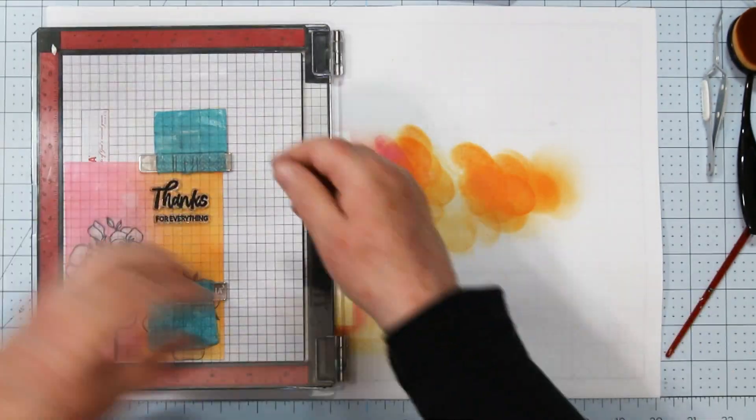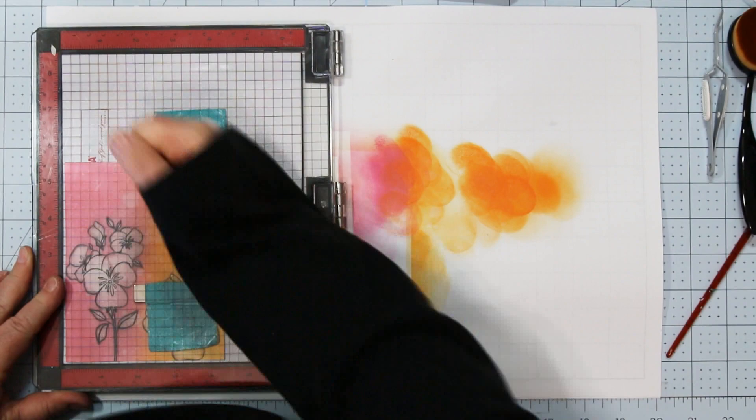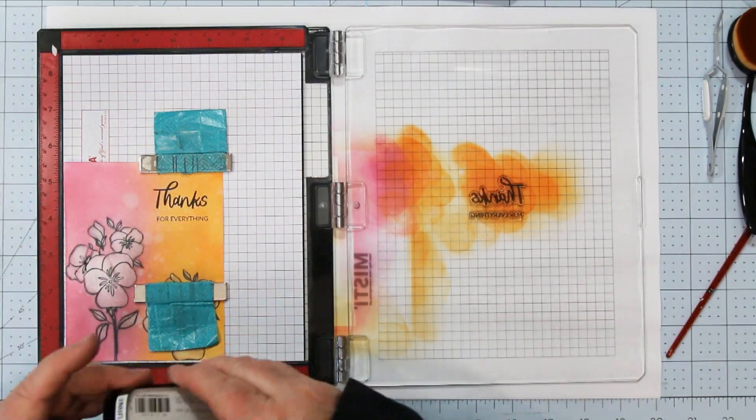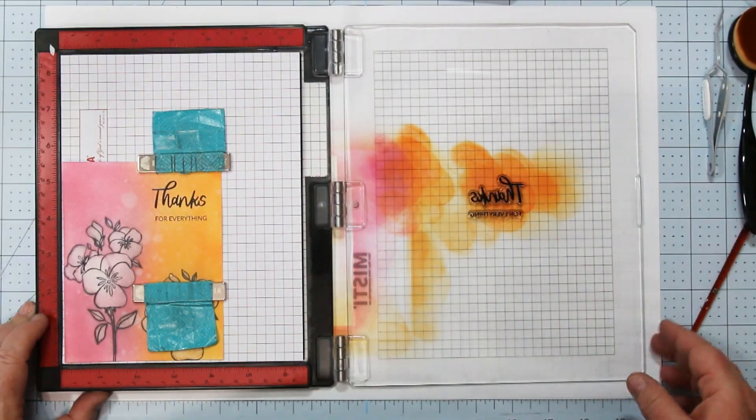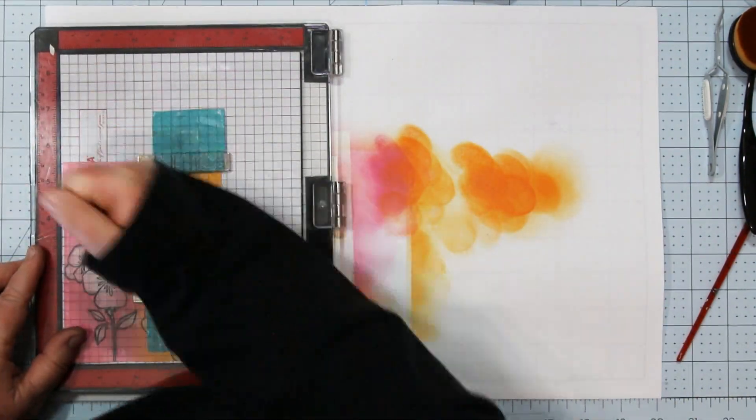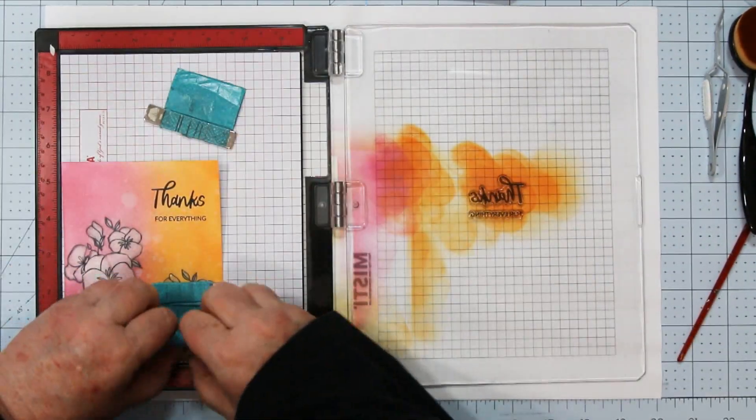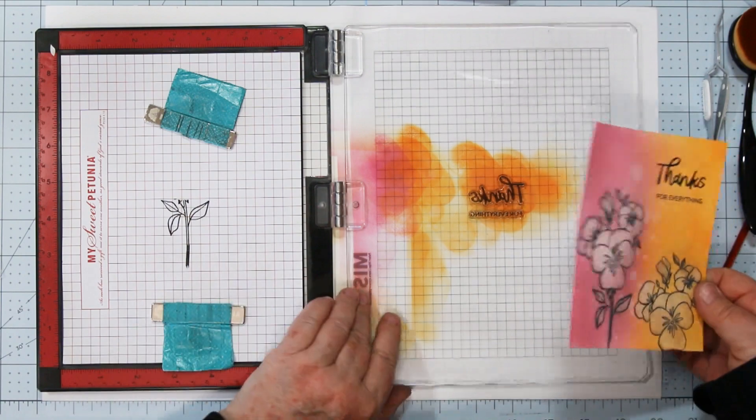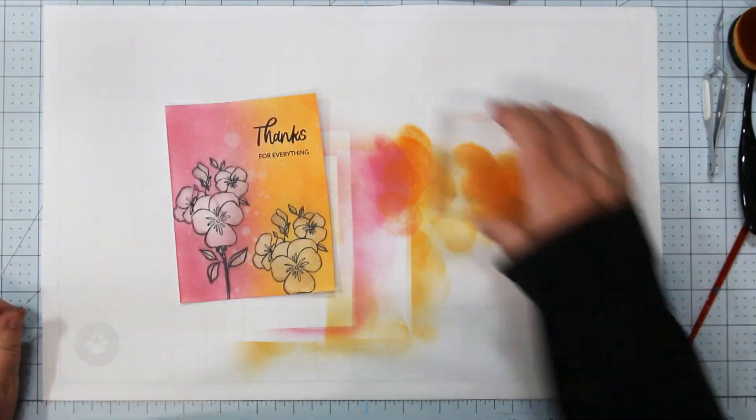And I do it twice because sometimes when you get Distressed Oxide inks wet they kind of blend the colors in a little bit and the black has a tendency to soak in. So if you do it a couple of times then it stays really nice and bright. All right, we're finished with that part.